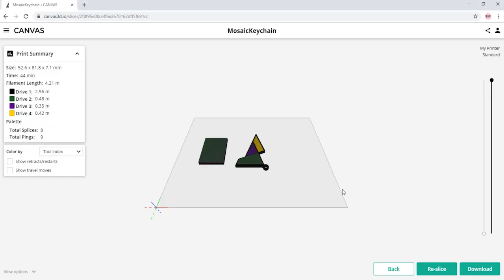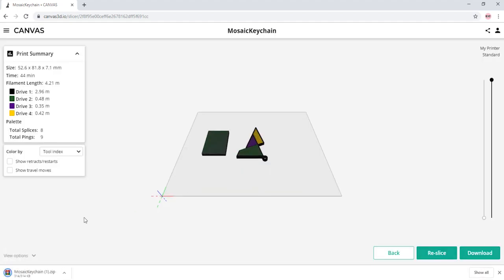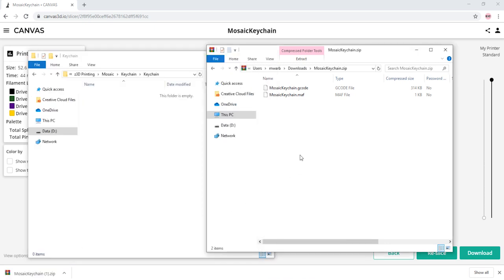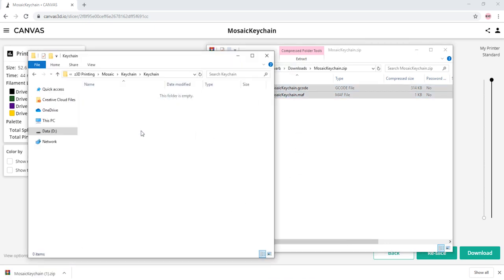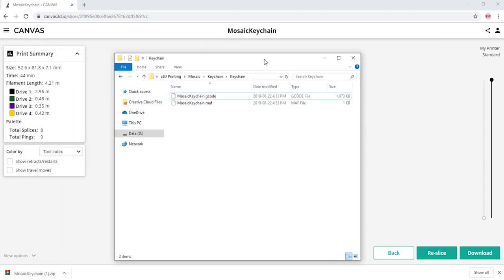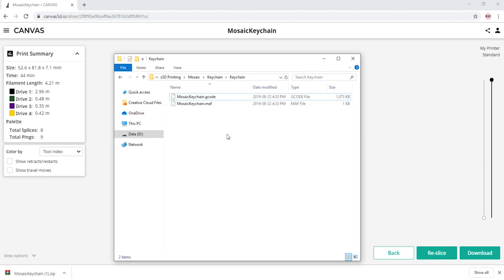Here we are on Canvas. We imported our files, selected our print profile, dragged colors onto our model, and clicked Slice. Now all we have to do is click Download. Canvas will output a zipped folder that contains our desired files. If we open it in a file browser, we will see two files. We suggest you export these files into a folder on your computer.